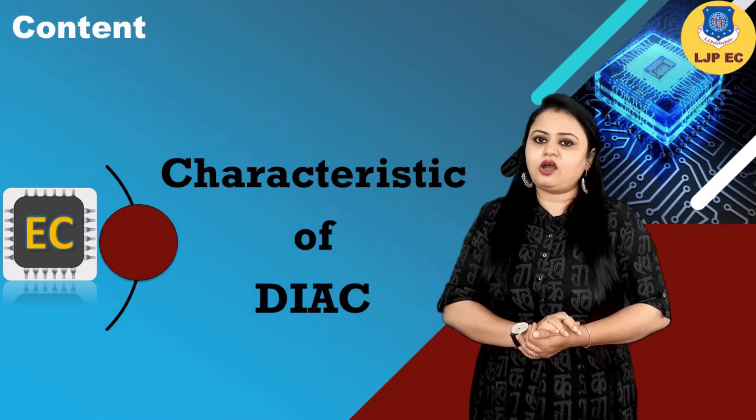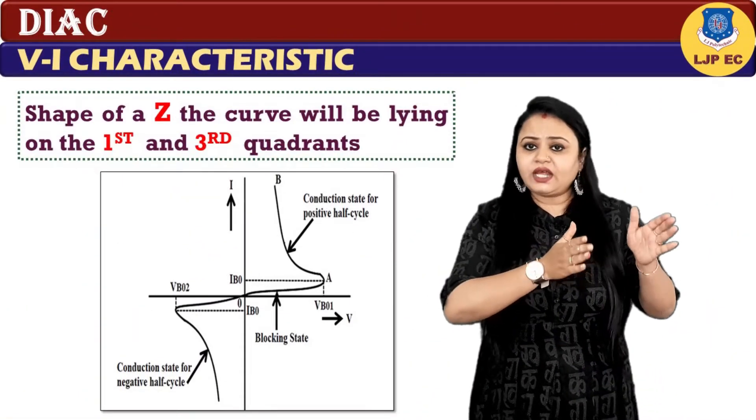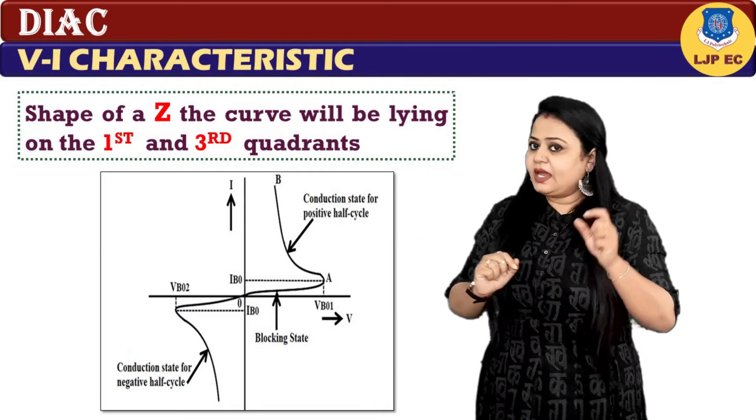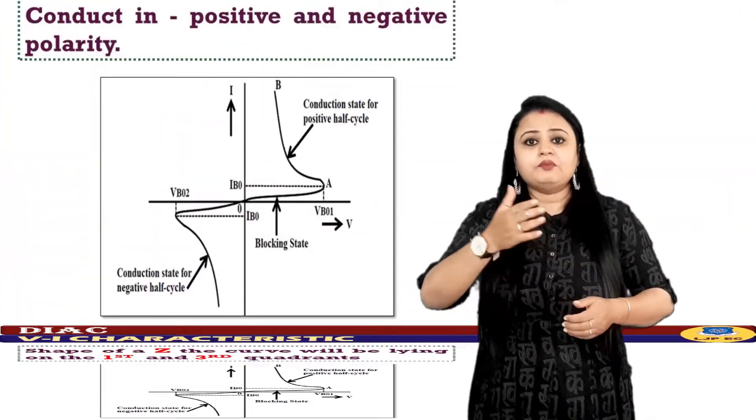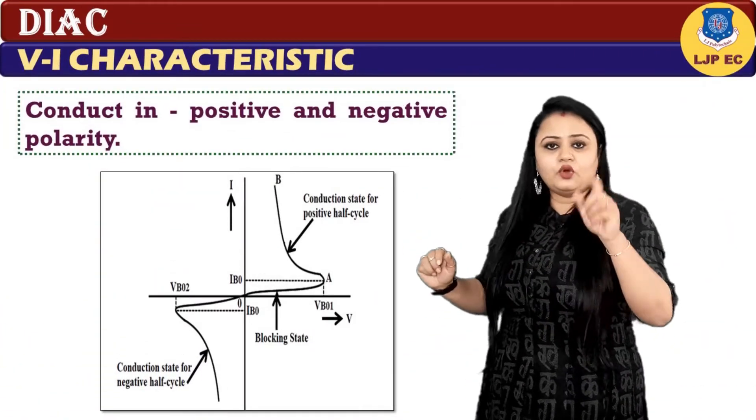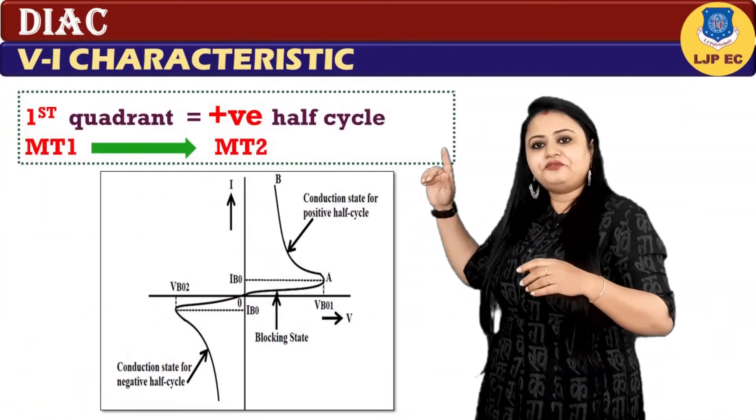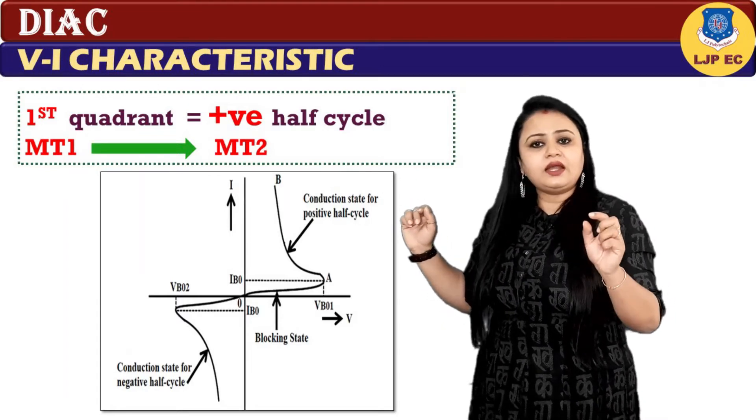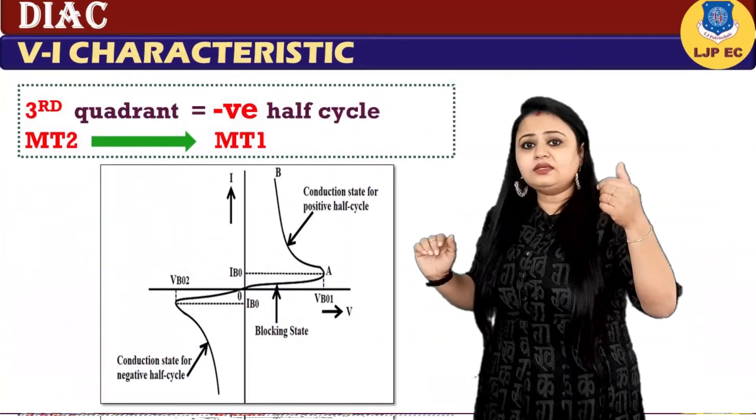Now let us see the V-I characteristic of DIAC. The V-I characteristic curve of DIAC will be in the shape of a Z, and the curve will be lying on the first and third quadrants because they conduct in both positive and negative polarity. The first quadrant represents the positive half cycle where current flows from MT1 to MT2, and the third quadrant represents the negative half cycle where current flows from MT2 to MT1.